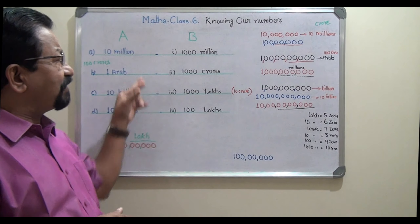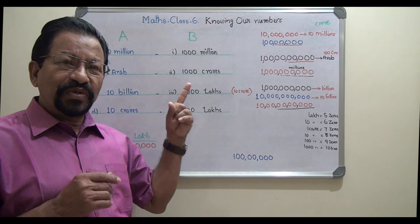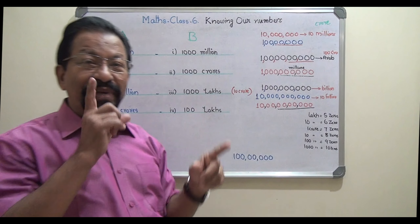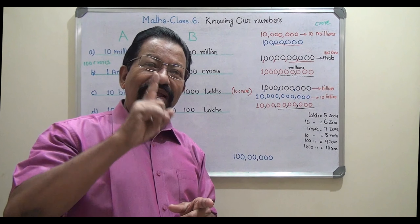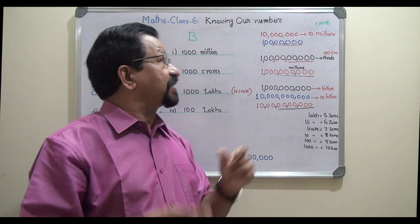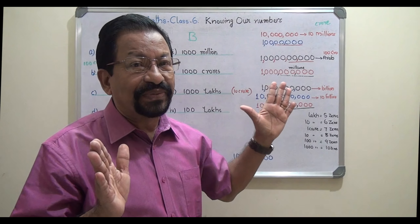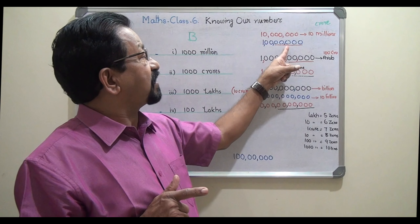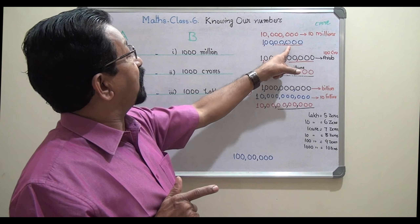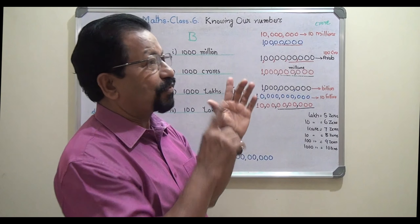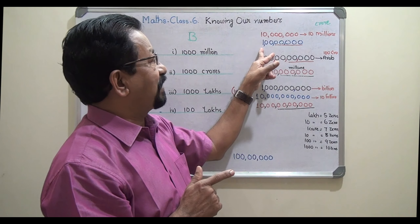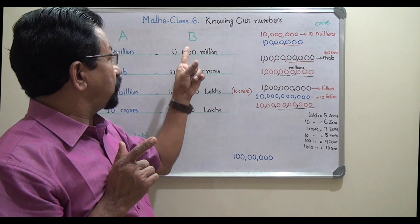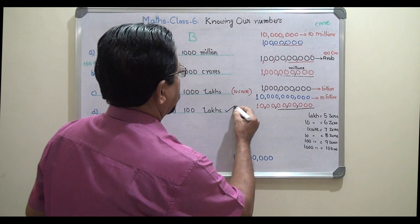Now, 10 million is in the international number system. Write that number: 1 million means 1 and 6 zeros, so 10 million means 10 and 6 zeros — a total of 7 zeros. Writing the same number in the Indian system with commas placed as 3, then 2, then 2, you count 5 zeros which gives lakhs. The number before the lakhs position is 100, so 10 million equals 100 lakhs. That is the correct answer.